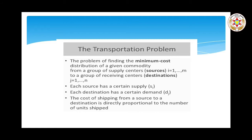The transportation problem involves finding the minimum cost distribution of a given commodity from a group of supply centers to a group of receiving centers — sources and destinations. Each source has a certain supply, each destination has a certain demand, and the cost of shipping from a source to a destination is directly proportional to the number of units shipped.